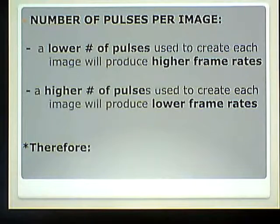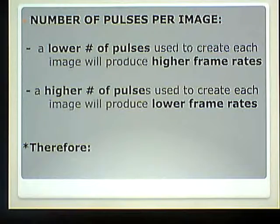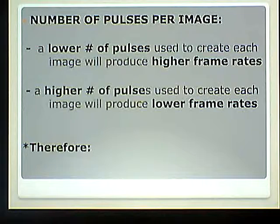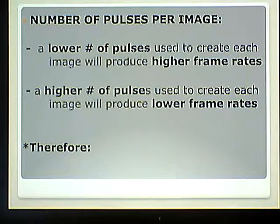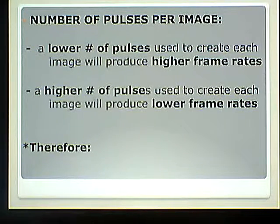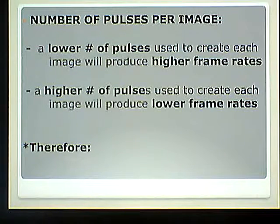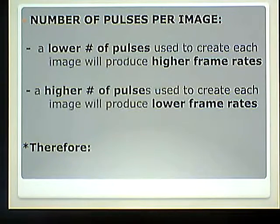If I use five pulses to make an image and each one takes a second to go there and back — my go-return time — that's going to be five seconds to create an image. If I use ten pulses and each one takes a second to go there and back, I now take ten seconds to make each image. The numbers are big, but I'm using them so you can understand the concept.